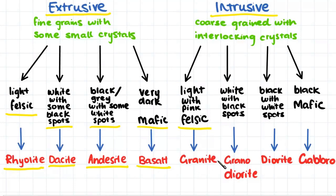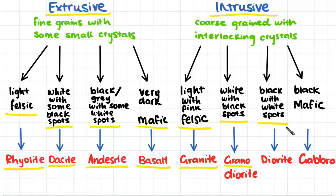Any intrusive rock that is quite light in color and has some pink included in it is a felsic rock and is probably granite. An intrusive rock that is white with some black spots is granodiorite. When we have a black rock with some white spots, we call this diorite, and a rock that is intrusive and all black is probably mafic and therefore gabbro.